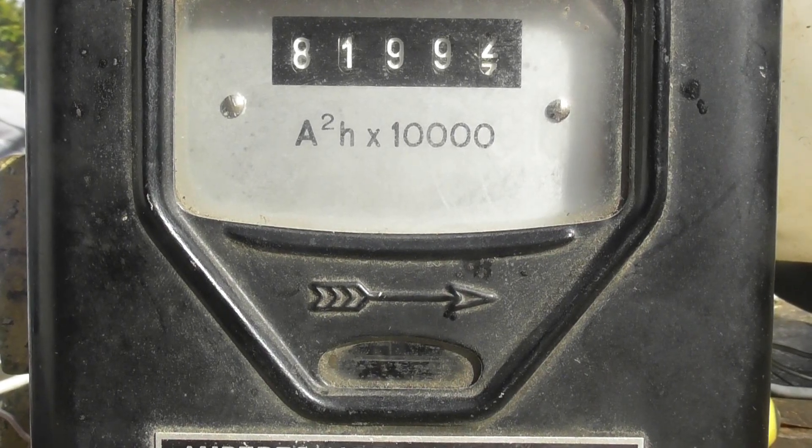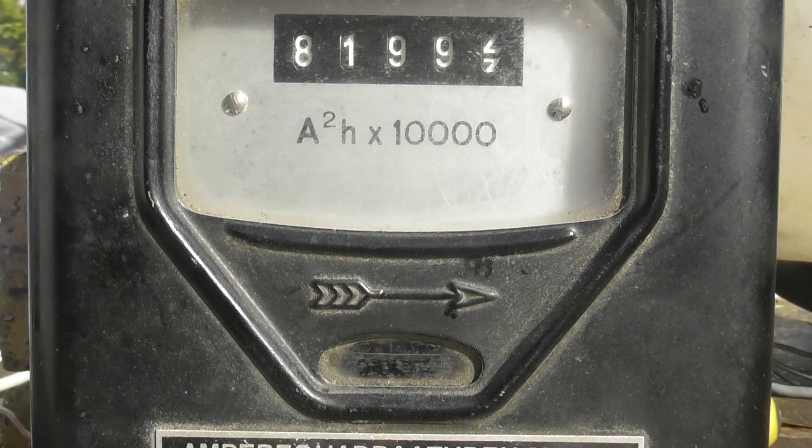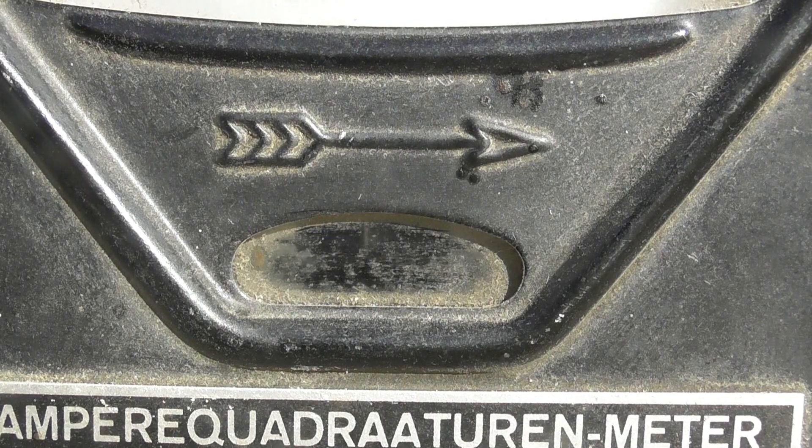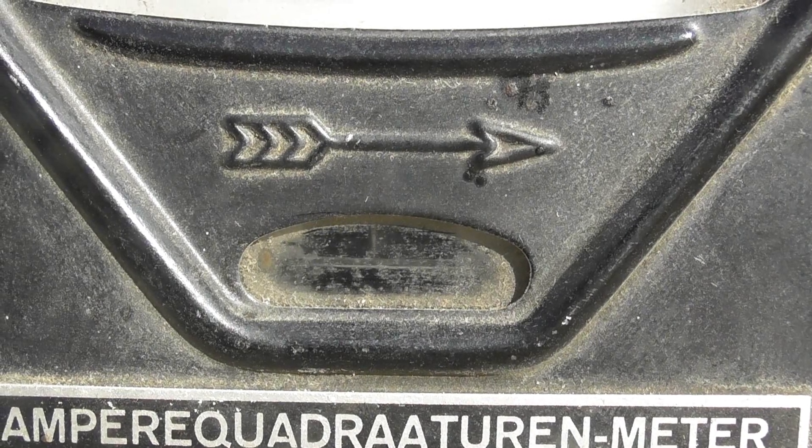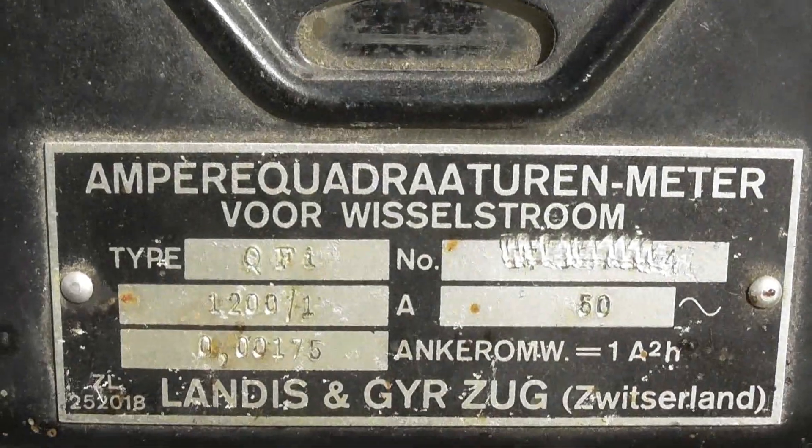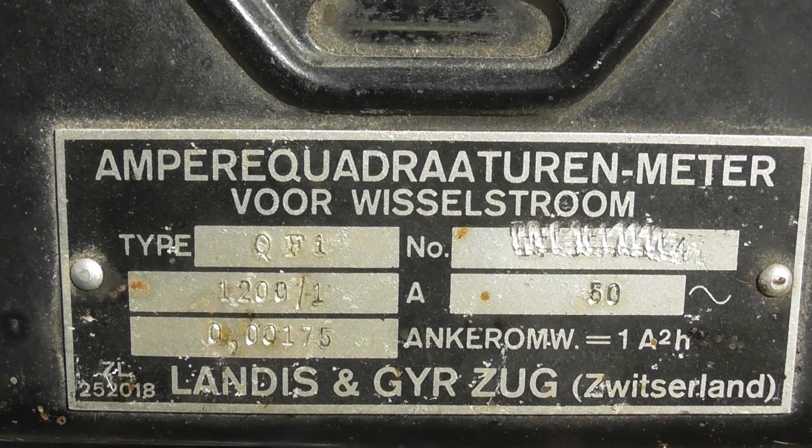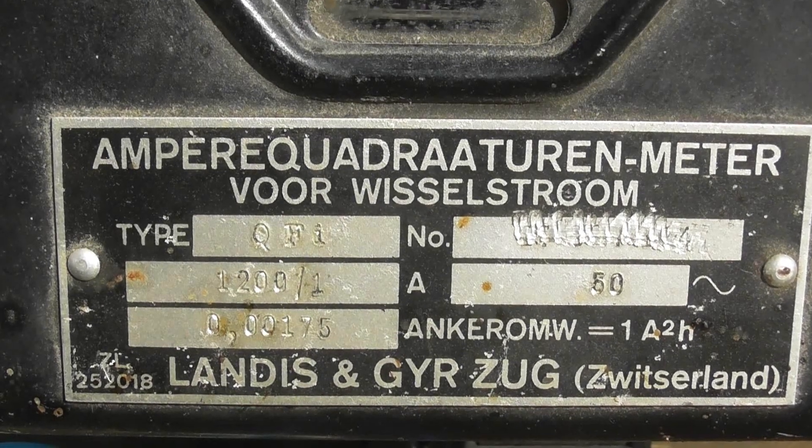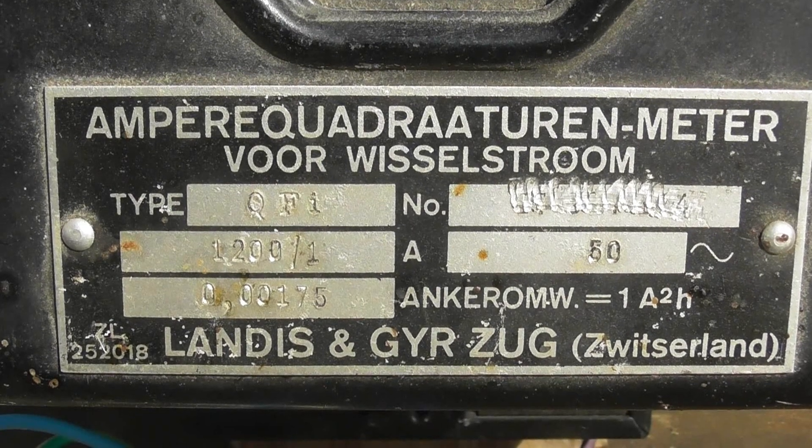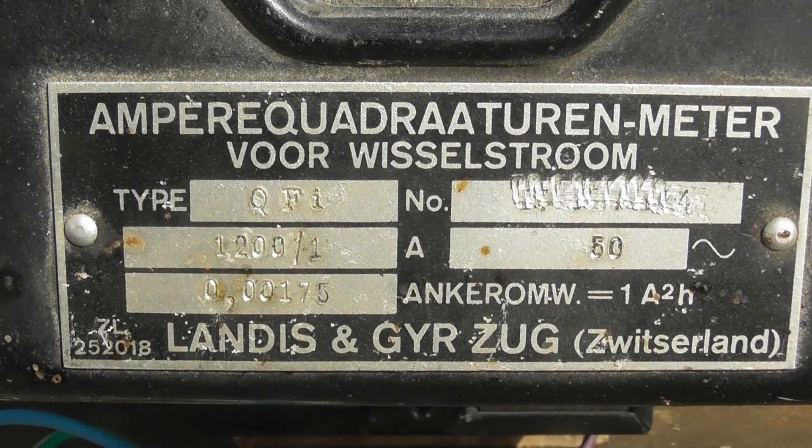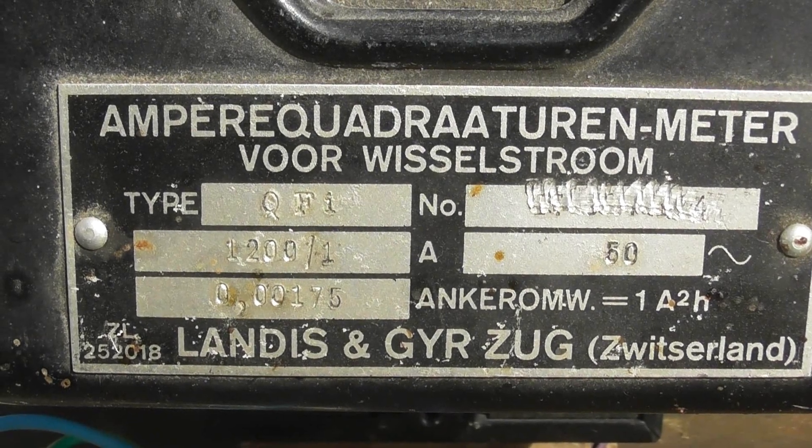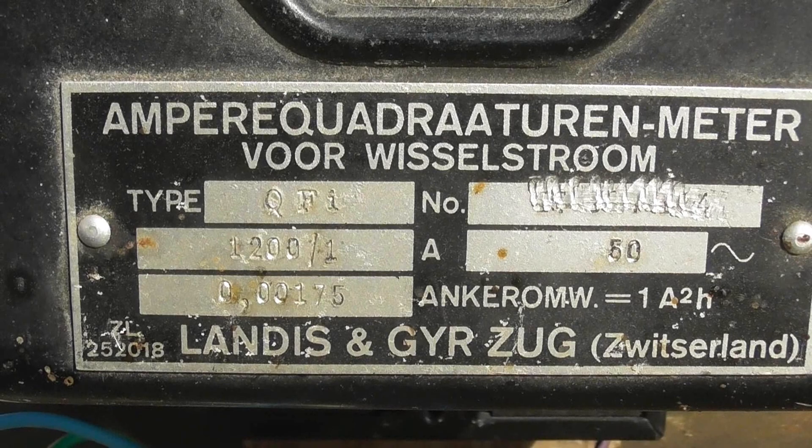This meter has taken off. I'll take the cover off shortly. You can see the disc on this go a bit lower. I'm pretty fast. And this is the label. Okay, meters are used for the CT ratio of 1200 to 1 ampere in its previous life. Ampere square hour meter for alternating current, Landis & Gyr, Switzerland.